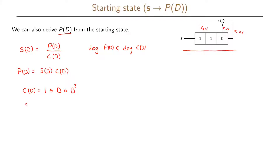Since we know the starting state of the LFSR, we can write the first few terms of the D-transform of our sequence S. Since we first have a 1 in our LFSR, the first bit output is 1. Since we also have a 1 in the next position, the next output is also 1, giving a D term. Since we have a 0 in the last bit of our starting state, there is no D-squared term — instead we have terms of D cubed and higher.